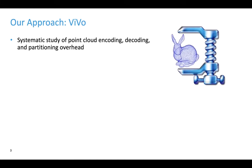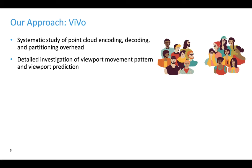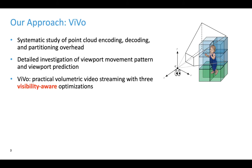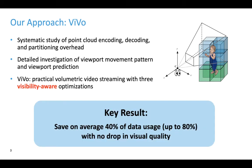To determine the partitioning overhead and gain a deeper understanding of volumetric video, we first conducted a systematic study of various aspects of point cloud. To check whether we can extend viewport adaptive streaming to volumetric videos, we investigated viewport movement patterns and viewport prediction through a user study. Based on the observations, we designed, implemented, and evaluated Vivo, a volumetric video streaming system with several visibility-aware optimizations. Our experimental results demonstrate that Vivo can save on average 40% mobile data without affecting visual quality.